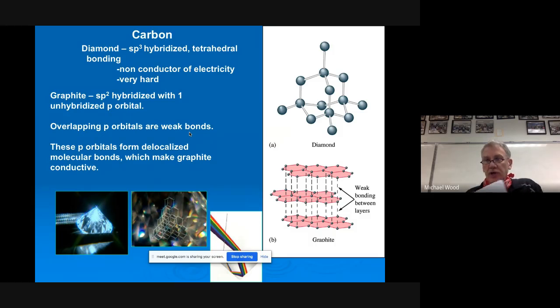Both of these are in this category of covalent network solid. Diamond and graphite are both made out of pure carbon, but the difference is how they're connected. This goes back to chapter nine. Graphite is sp3 hybridized tetrahedral structure, four electron domains. It's a non-conductor of electricity, so the electrons cannot move around at all. And it's very hard. Diamond is made out of pure carbon.